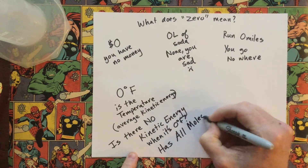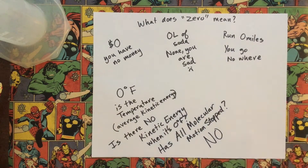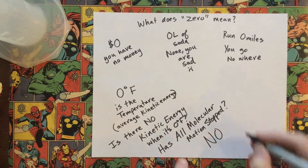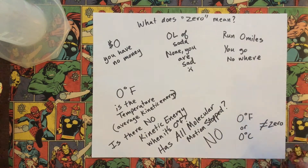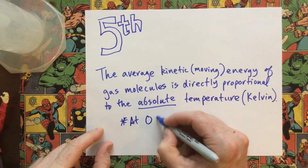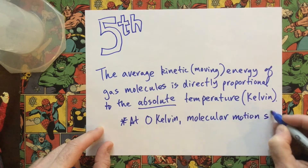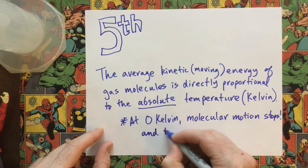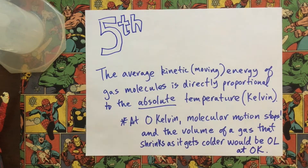Has all molecular motion stopped entirely? No, of course not. Molecules are still moving when it's zero degrees Fahrenheit. So in this case, zero really doesn't mean zero. We had to come up with a temperature scale where zero really was zero — that's what Kelvin is for. At zero Kelvin, molecular motion actually would stop. Zero would mean zero, and the volume of a gas that shrinks as it gets colder would be zero liters at zero Kelvin.